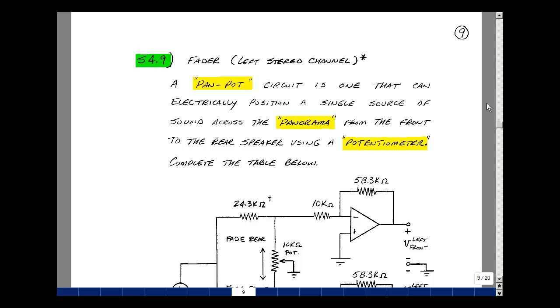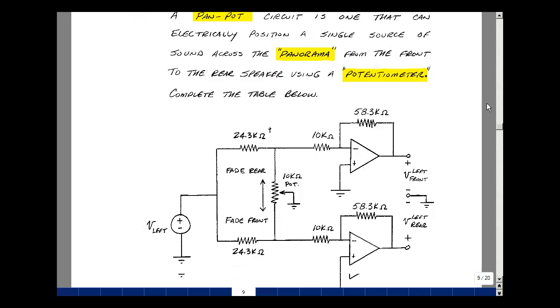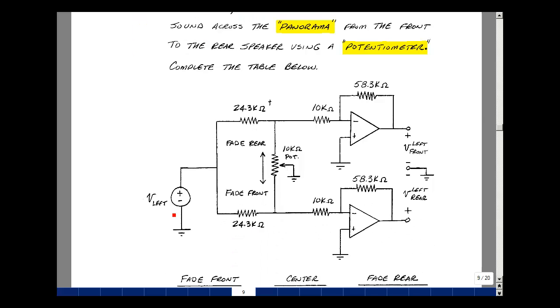What I've shown here is one of the two channels. This is the left, and I've got my music coming in on the left channel. I'm going to move this pot wiper arm back and forth, and we'll see what happens to the output at the left front speaker and the left rear speaker.